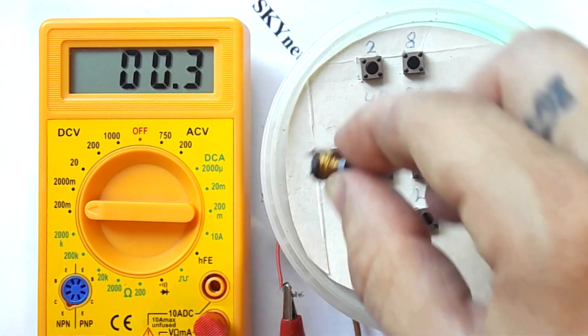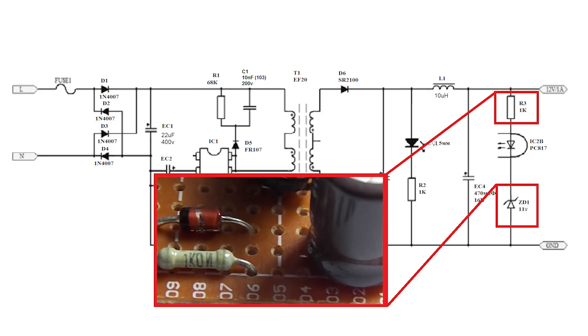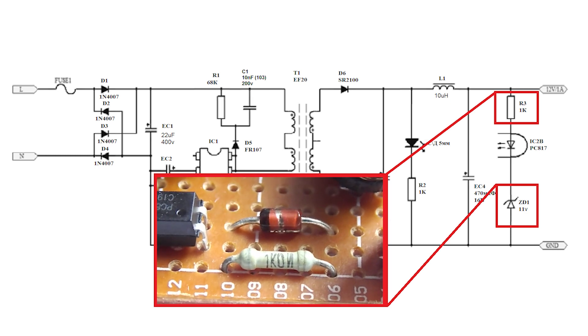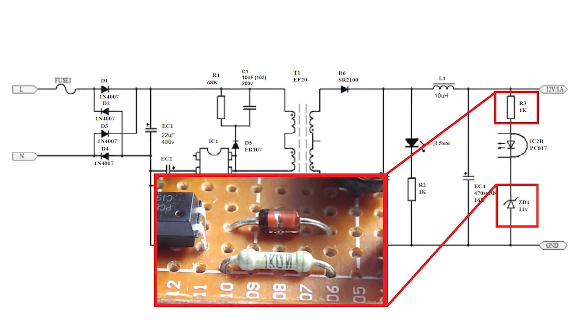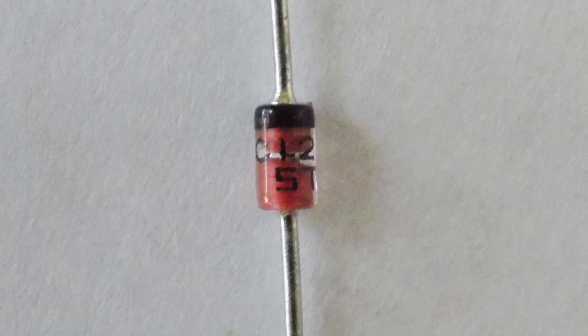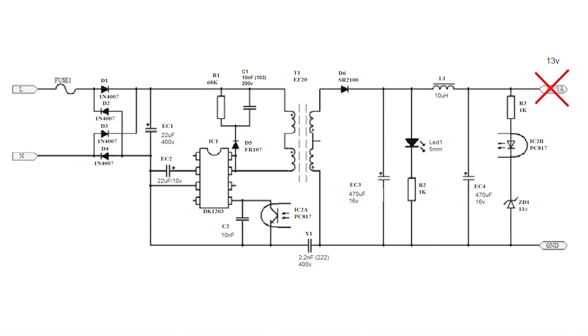The inductance was approximately 11.5 microhenrys. For the power supply, the error is quite acceptable. R3 is a 1kΩ resistor. ZD1 is an 11V Zener diode. I didn't have it in stock and therefore I put a 12V Zener diode. Because of this, the voltage at the output of the power supply was not 12V, but 13V.